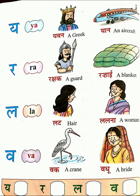See the next page. Letter YA. 'Yaavana', Y-A-A-V-A-N-A — Greek, G-R-E-E-K. Then 'yaan', Y-A-A-N — an aircraft, A-I-R-C-R-A-F-T.